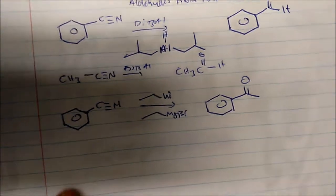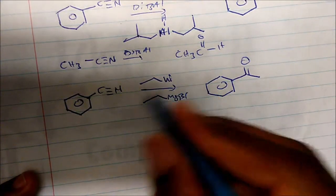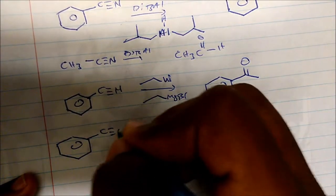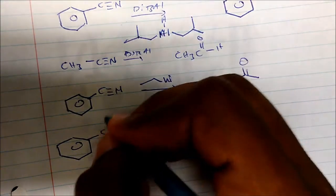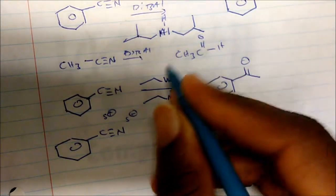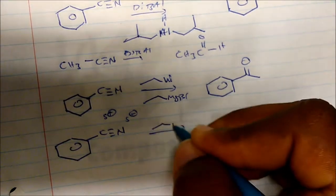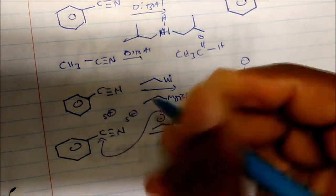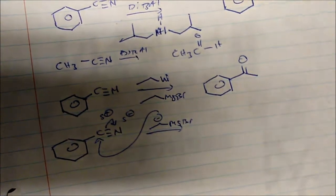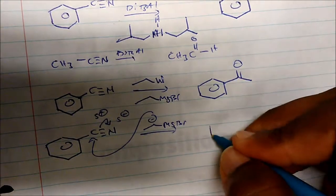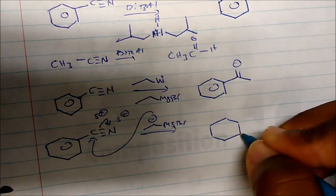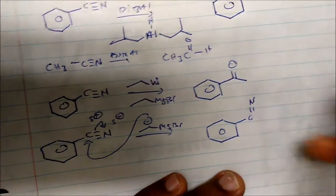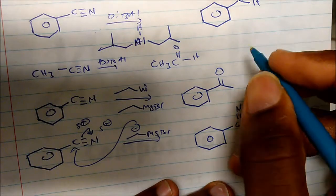Let's look at the mechanism for how this happens. In solution, the nitrile carbon is partially positive and the nitrogen is partially negative. If I take ethylmagnesium bromide, its carbon is nucleophilic, so it's going to attack the nitrile carbon and move those electrons onto the nitrogen.